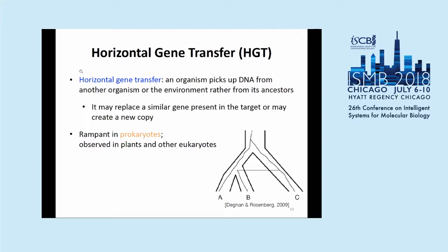Another cause of discordance is horizontal gene transfer. For some species, like bacteria, they very often just pick up genetic material from the environment — not from their ancestor, but from the environment. If that happens, then for the region where this material was picked up, that gene tree is not going to necessarily match your species tree.